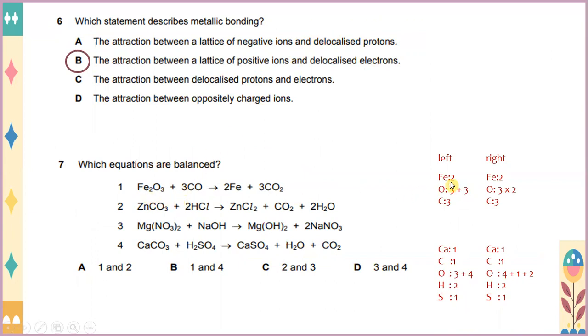If you see here, Fe on the left, Fe is 2. Oxygen is 3 plus 3, then you get the value of 6. C here is 3. Let's look on the right-hand side. You have 2 Fe. You have 2 Fe. And you have oxygen is 6, 3 times 2, you get 6. And the value of C is 3. So number 1, the equation is balanced.